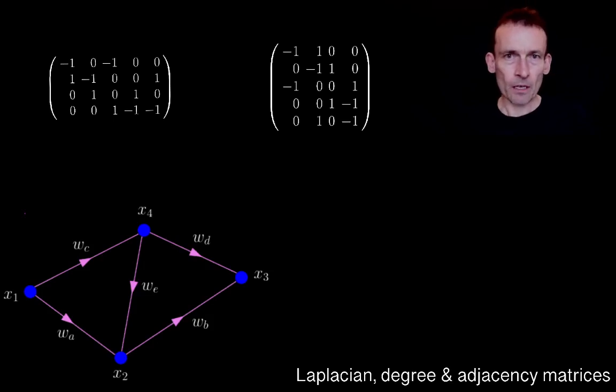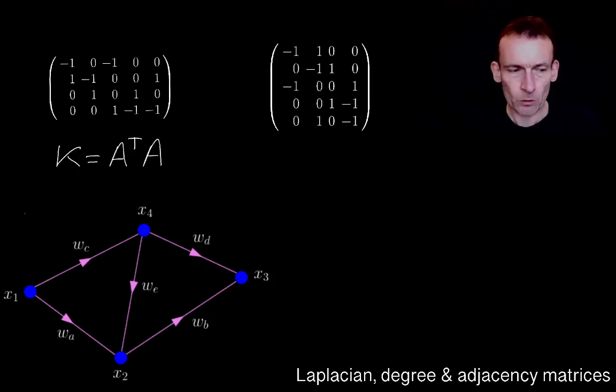We'll go back to electric circuits in just a minute. Let's just have a detour because when we combined Ohm's law with Kirchhoff's current law, a matrix K came up. The matrix K that came up was called the Laplacian, and it was A transpose A.